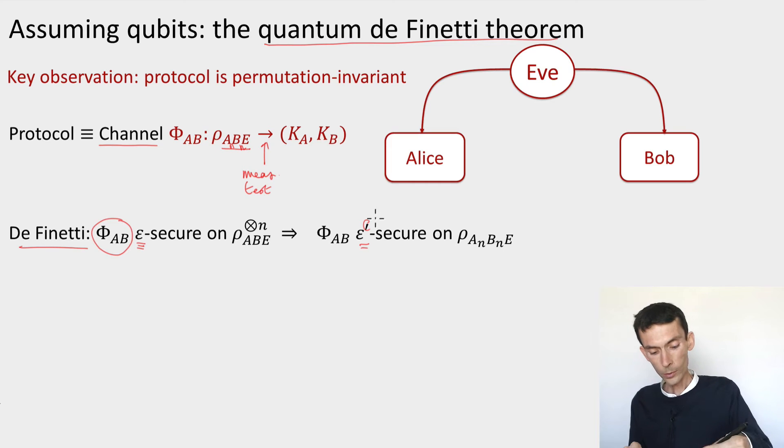Now what's epsilon prime? Epsilon prime is going to be, at most, epsilon times some factor, which depends on the dimension. So here's where we need to control the dimension. It's going to be roughly some polynomial in n raised to some exponent, which depends on d.